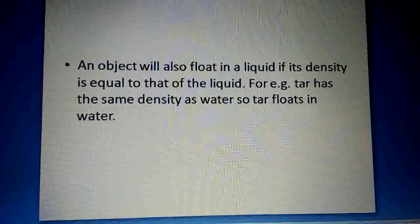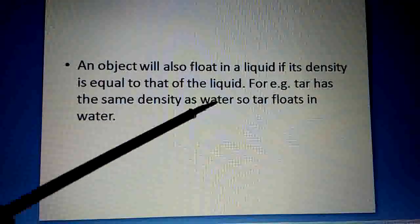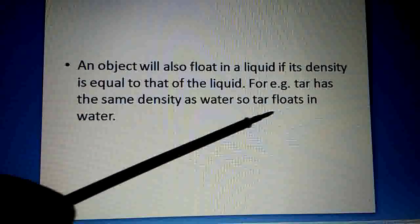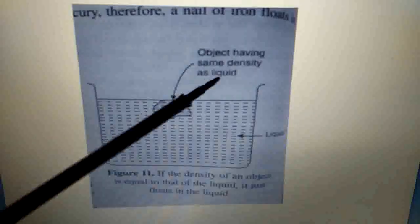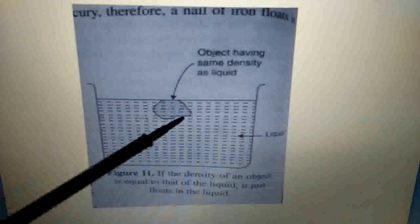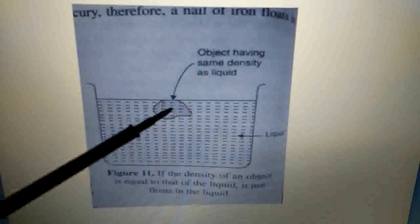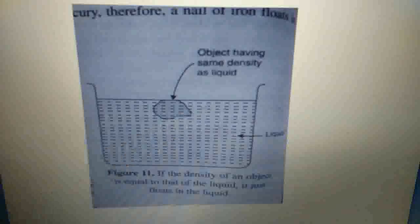Tar floats in water because its density is equal to the density of water. When an object's density is equal to the density of the liquid, the object floats in such a way that it is entirely within the liquid — no part of the object is above the surface of the water.